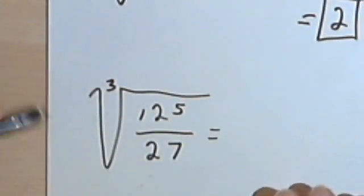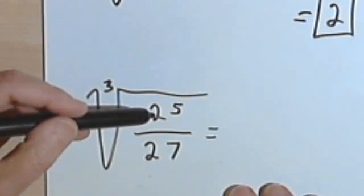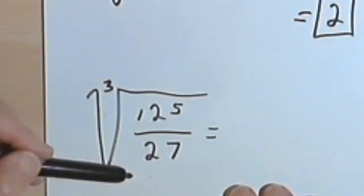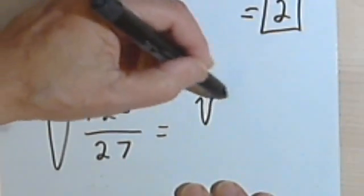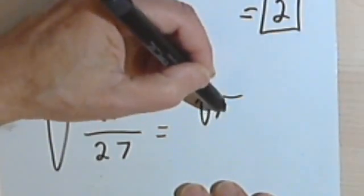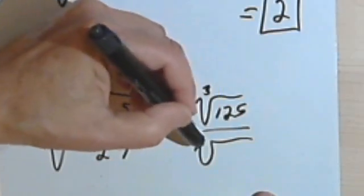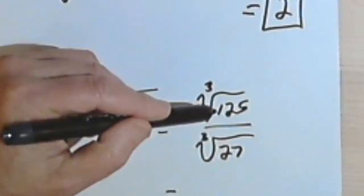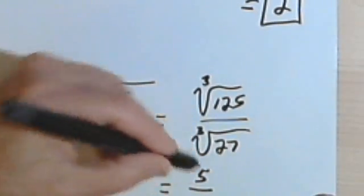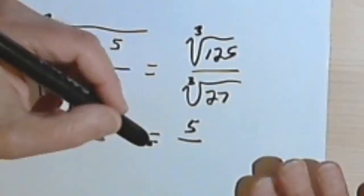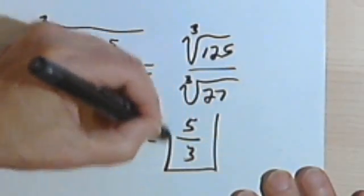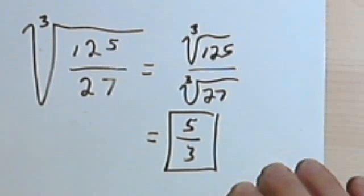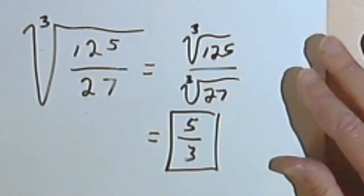One more: here we have the cube root of 125 over 27. Both of these are perfect cubes, so I'm going to have the cube root of 125 over the cube root of 27. The cube root of 125 is 5, and the cube root of 27 is 3. So the answer is 5 thirds. That's about it for now — take care, I'll see you next time.